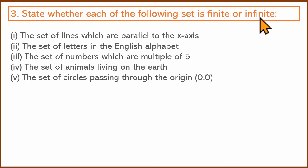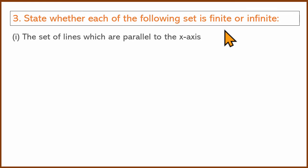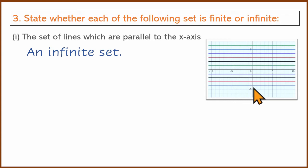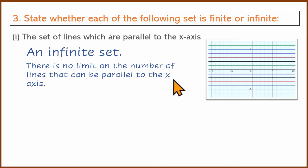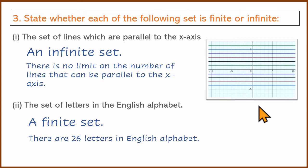State whether each of the following sets is finite or infinite. The set of lines which are parallel to the x-axis — this is an infinite set. There is no limit on the number of lines that can be parallel to the x-axis. Each line parallel to the x-axis is at some distance from it, and there is no limit to that. So this is an infinite set.